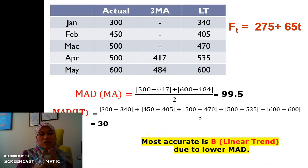So that's all for today. We are comparing two types of forecast methods. The first one is the moving average, and the second one is the trend. Then we need to compare using the MAD to come up with the most accurate method. So I hope you understand. Thank you. I will see you again.